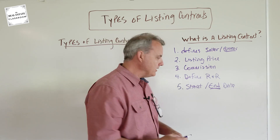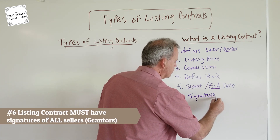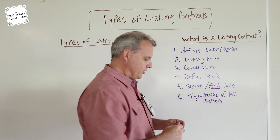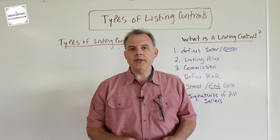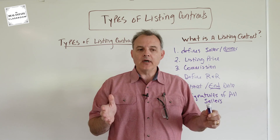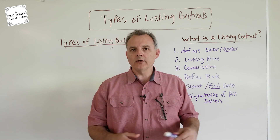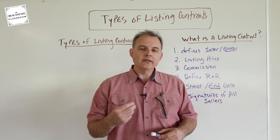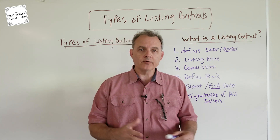The next thing it must have is the signatures of all sellers — all of them. Not just one out of two, not a majority. Anyone that has a legal interest or legal ownership in that real estate must sign the listing contract. If the real property is owned by a corporation or an LLC, we go to the operating agreement or the articles of incorporation to find out who has signature authority on behalf of the other principals within that organization.